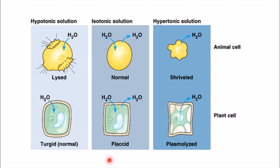The third type of solution is a hypertonic solution. In a hypertonic solution, the concentration of water is greater inside the cell than outside, so the water leaves the cell. Hypertonic solution is one where the concentration of solute is greater outside the cell than inside the cell. This process is called exosmosis — water leaves the cell. In the animal cell, water is leaving and that is why the cell is shrinking.